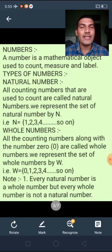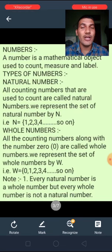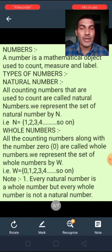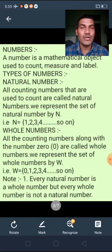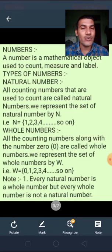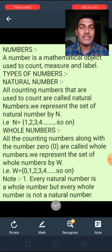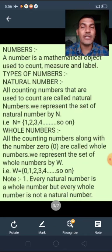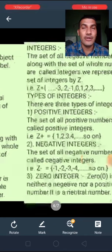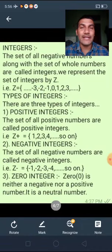Next is whole numbers. All the counting numbers along with the number zero are called whole numbers. We represent the set of whole numbers by capital W, that is W = {0, 1, 2, 3, 4, ...} and so on. Note: every natural number is a whole number, but every whole number is not a natural number.